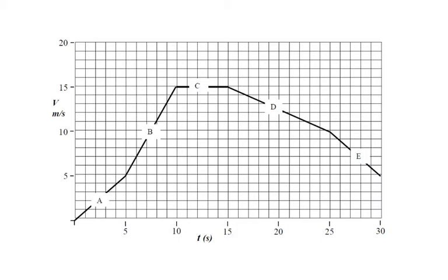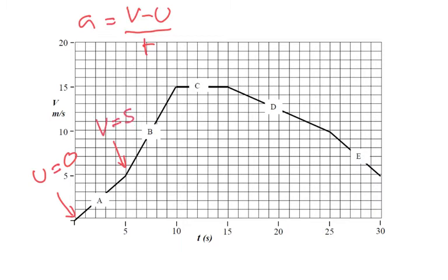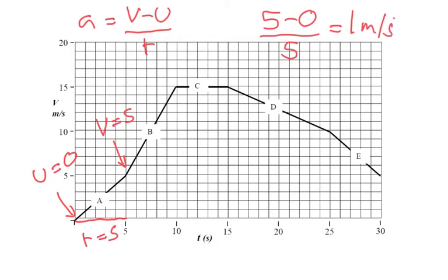Not only can a velocity-time graph help us find distance traveled, we can also use it to find acceleration — the rate of change of velocity. To do that, we use the formula: acceleration equals final velocity (v) minus initial velocity (u), divided by time taken (t). For section A, u is 0, v is 5, and t is 5 seconds. So 5 minus 0 divided by 5 equals 1 meter per second squared.